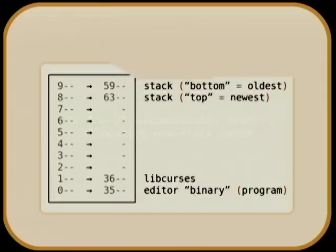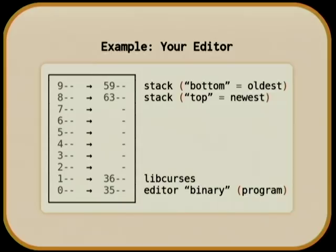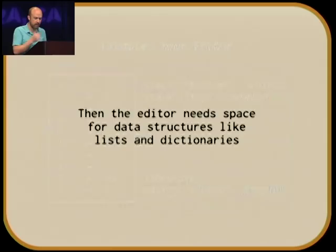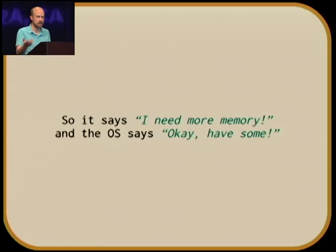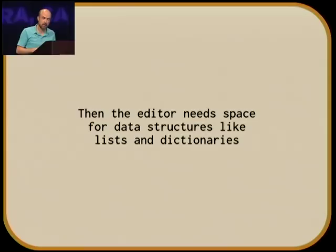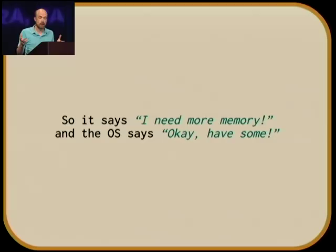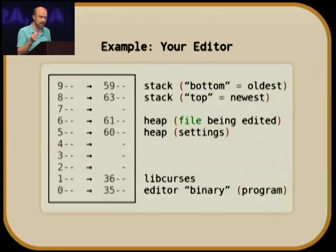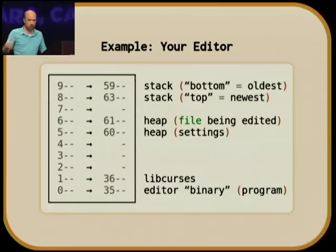The editor's main function gets kicked off and starts calling other functions, so the OS will automatically start to allocate stack pages as that call graph grows. That tends to start at the top of memory and work down. The pages can be pulled from anywhere in RAM that has free pages because the association is completely free. Your editor might then need space for data structures — lists, dictionaries, buffers — and you get another growing memory area called the heap, which holds persistent data structures.